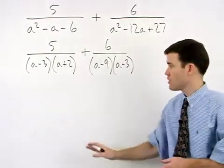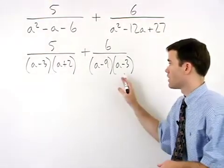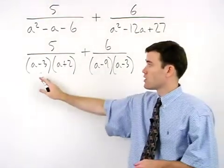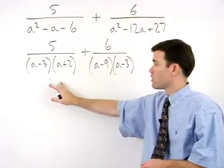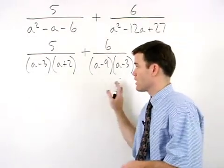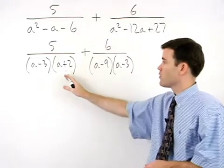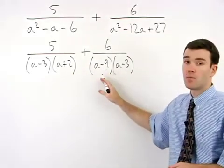Notice that these two denominators share a factor of a minus 3, so their common denominator would include the a minus 3 that they share times a plus 2 times a minus 9.